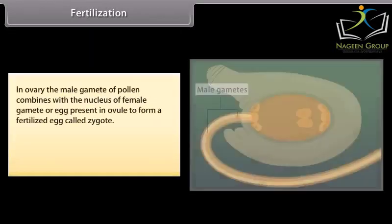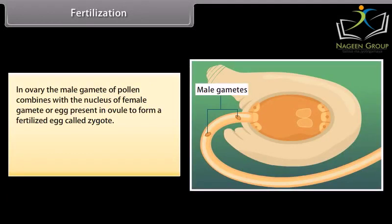In ovary, the male gamete of pollen combines with the nucleus of female gamete or egg present in ovule to form a fertilized egg called zygote.